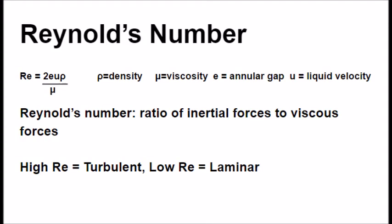Now, how do these two relate? That is through the Reynolds number, which is the ratio of inertial forces to viscous forces for fluid flow. The Reynolds number also determines which type of flow the fluid will be in. A low Reynolds number means that viscous forces will dominate, and this corresponds to laminar flow. A high Reynolds number means that inertial forces dominate, and this corresponds to turbulent flow.